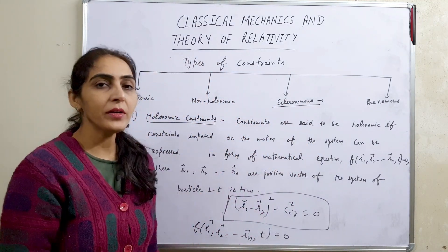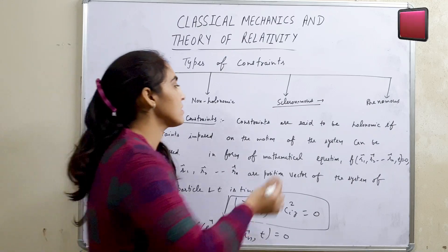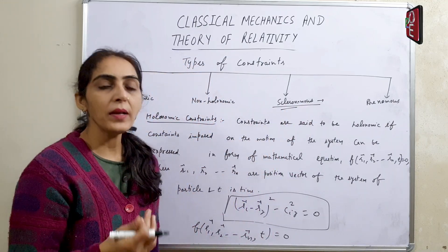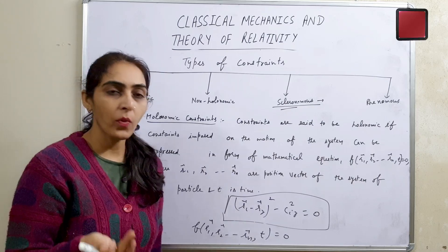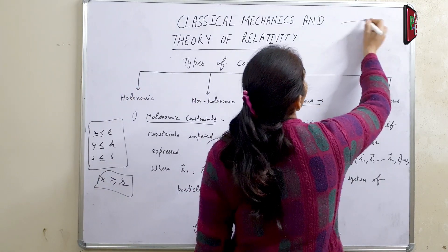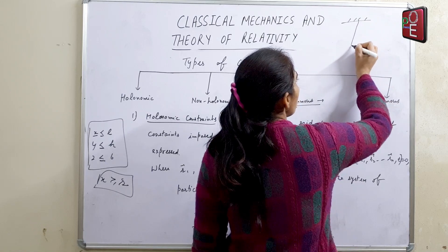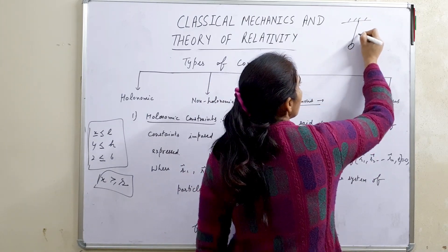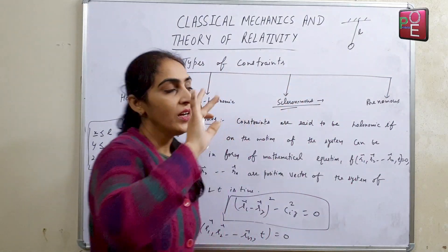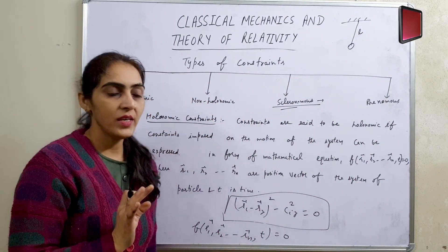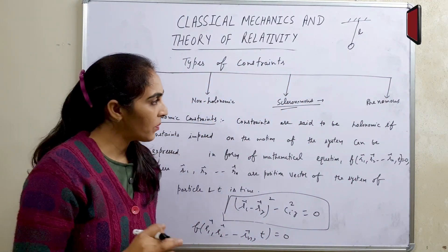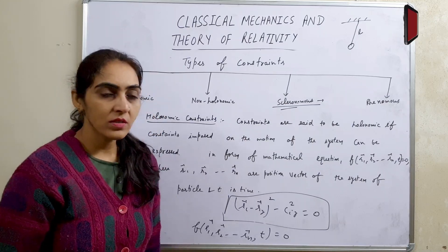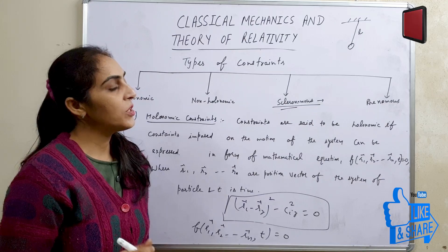Scleronomous constraints: the constraints which are independent of time are known as scleronomous constraints। इसका example है simple pendulum with fixed support। Suspension से bob तक की distance L constant रहती है और time पर depend नहीं करती — ऐसे constraints को scleronomous constraints बोलते हैं।